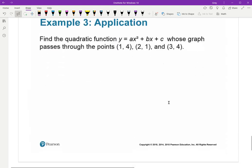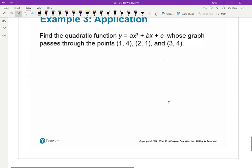The next example, last example I'm going to do is an application. You have other types of applications in your assignment. If you have any trouble setting up the equations, then you should come see me. This says, find the quadratic equation Y equals AX squared plus BX plus C whose graph passes through those points.